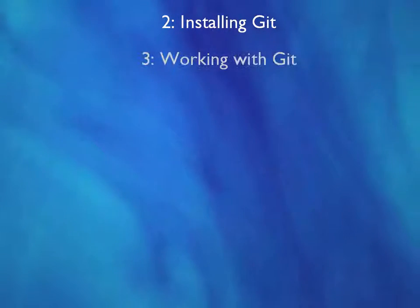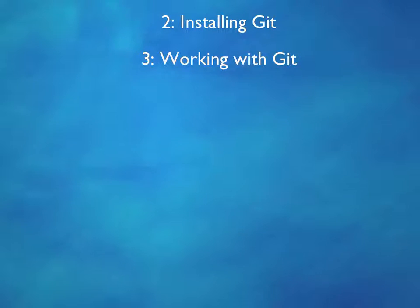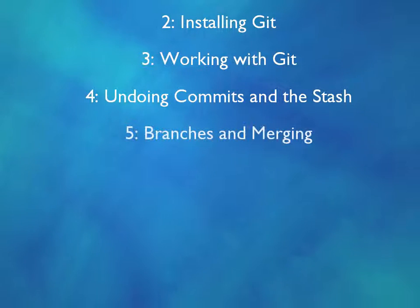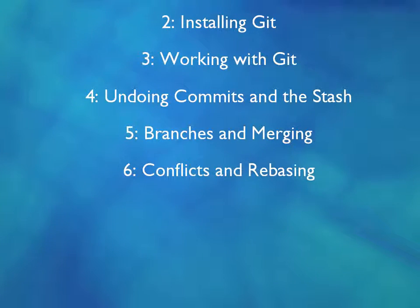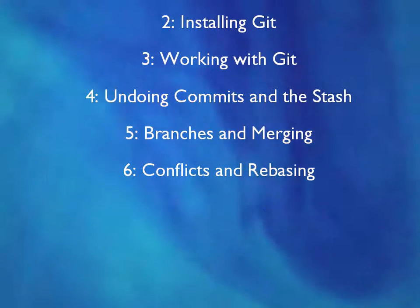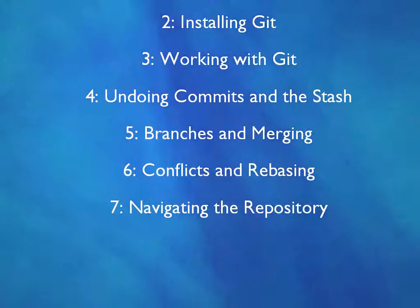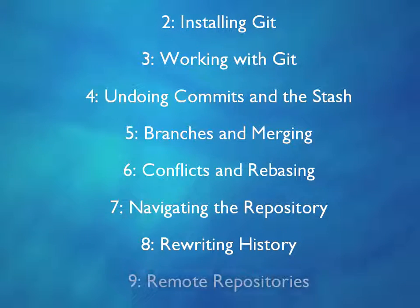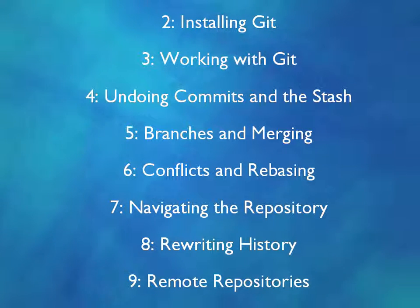In chapter 2, we'll install Git and have a basic introduction. In chapter 3, we'll start learning how to commit and make reviews of the code we commit into the Git repositories. In chapter 4, we're going to learn how to undo commits and use something called the stash — a temporary place for storing changes that we're not yet ready to commit. Chapter 5 covers branches and merging. Chapter 6 deals with merge conflicts and something called rebasing. In chapter 7, we'll learn how to navigate the repository. Chapter 8 covers how to amend commits and change things that have happened in the past. In chapter 9, we'll be working with a remote repository and will mention GitHub. Chapter 10 is the final chapter, where we summarize and give suggestions as to where you can go next.